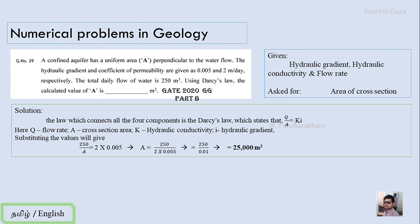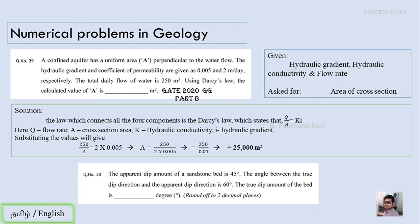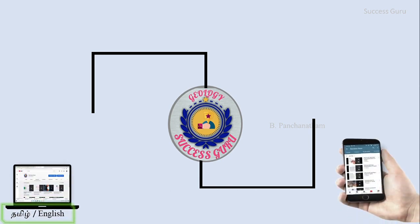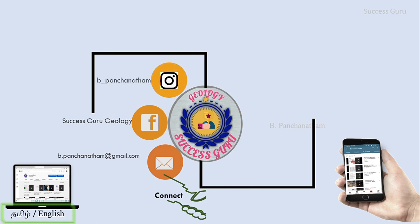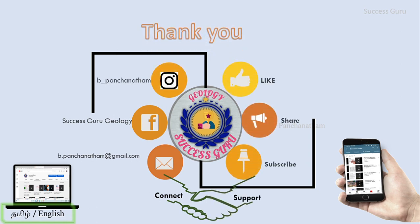If you are clear with these calculations, try this practice question from GATE Part B, question 30: the apparent dip of a sandstone bed is 45° and the angle between the true dip direction and the apparent dip direction is 60°. Calculate the true dip amount. You can check the previous video linked in the description or use the info button. According to the response for this video, we may continue this series. If you liked this video, give a thumbs up, like, share, and subscribe. Thanks for watching!